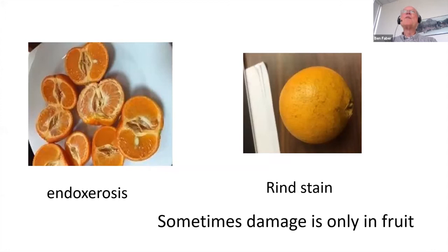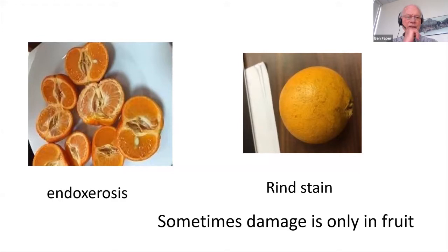Some of these problems we may not see in wilting — some are in the fruit. In avocado, you'll see black spots showing up in water-stressed trees. In the case of citrus, we've had drought and these little satsumas show what's called indoxyrosis — drying up in the center. You'll see some rind staining. These all show up in water-stressed trees.